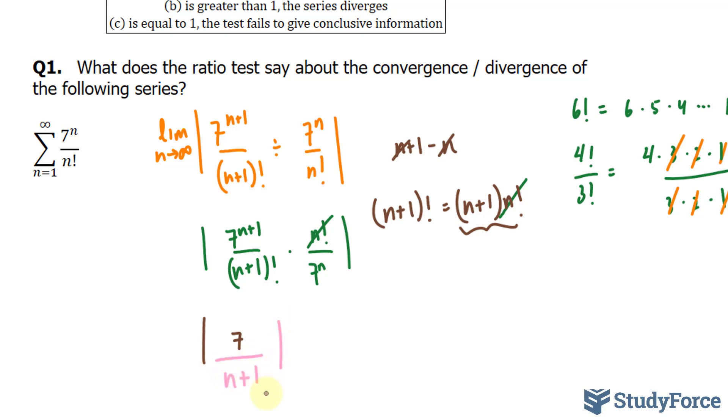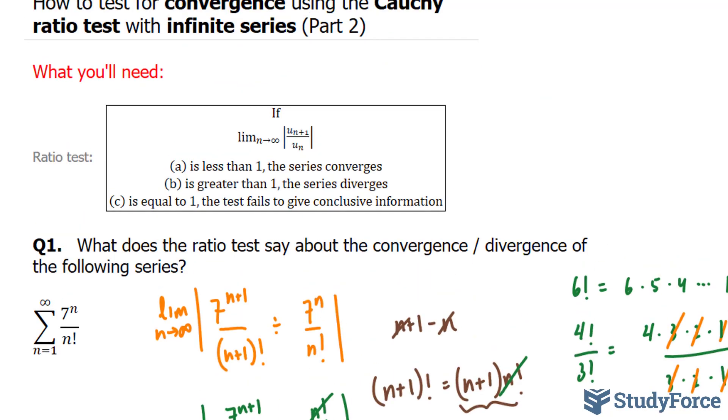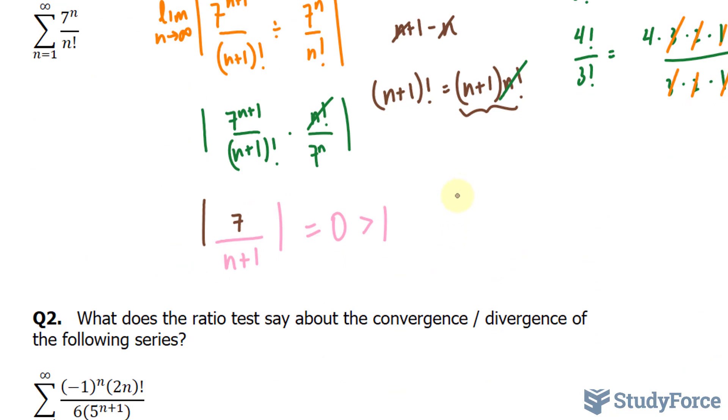Taking the limit of 7 over n plus 1, pretend we place a very large number into here, we have 7 over a very large number that will end up becoming 0. And since 0 is less than 1, according to the test, if you have a limit that's less than 1, this series converges. So I'll write down converge.